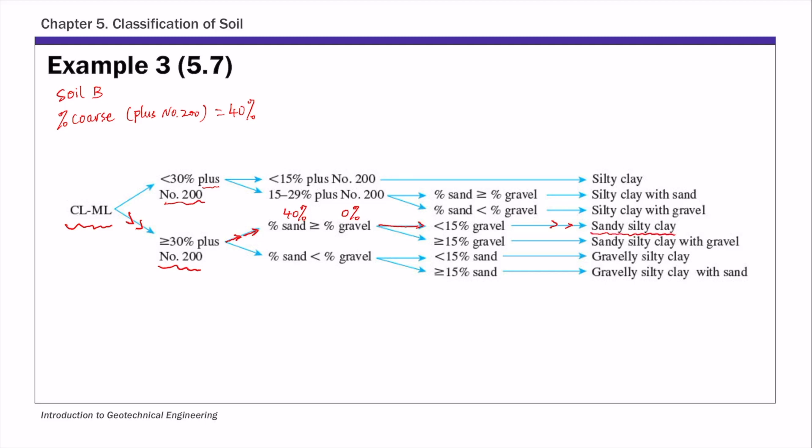And that leads us to the group name of soil B, sandy silty clay. So this is soil B group name.